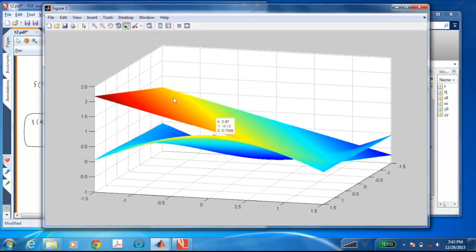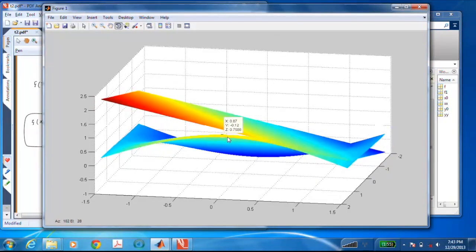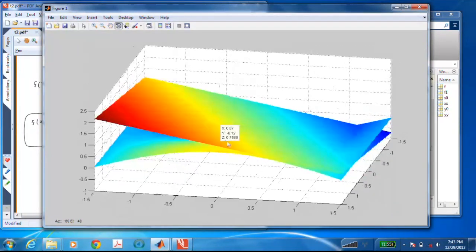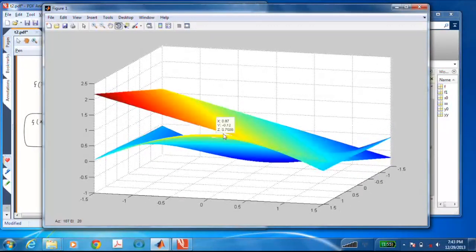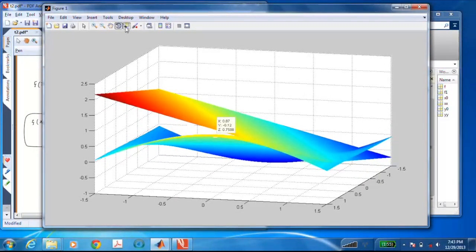And grab that point. So I'll come back here. I can't quite see it anymore, so I have to rotate it. Oh, I lost my point. That's okay, here it is. So let's see, we want y of 0.8 or thereabouts, that's π/4, and an x of about 1.